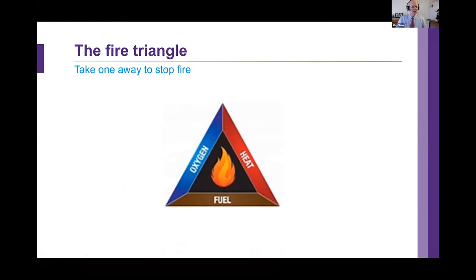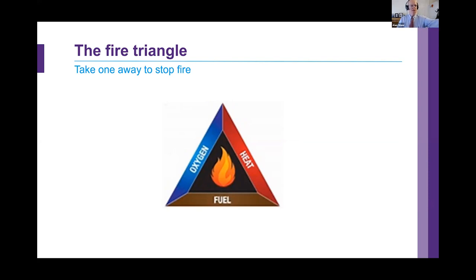The fire triangle. The secret, as you probably already know from our previous seminar, is to break the triangle by removing either one, or ideally two, of the sources shown. So remove the fuel, sources of heat or ignition, or remove the source of oxygen by smothering the fire or covering it with water, for instance. And as we saw in the previous webinar on the science and chemistry of fire, we can also break the fire triangle by disrupting chemically the fire process.